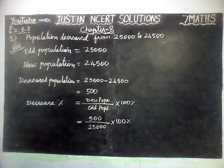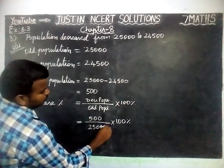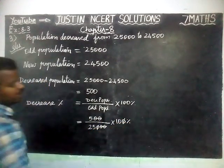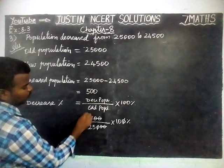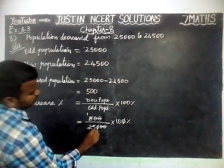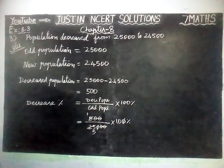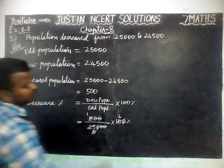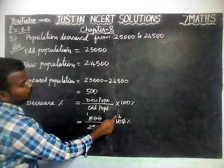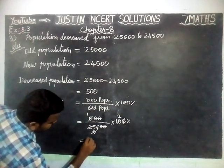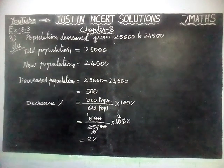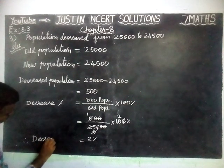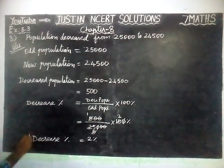Now we are going to simplify. Two zeros and two zeros get cancelled, then one more zero gets cancelled. 5 fives are 25, and 5 into 2 is 10, so the remaining number is 2. Therefore, Decreased Percentage is equal to 2.